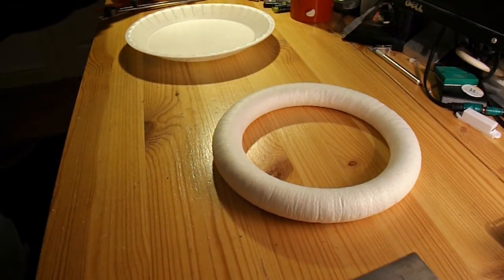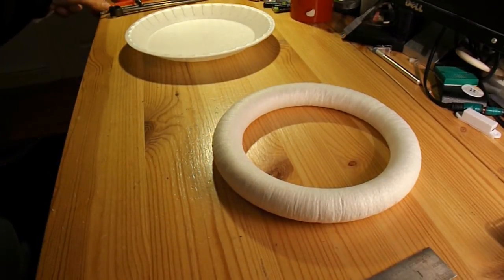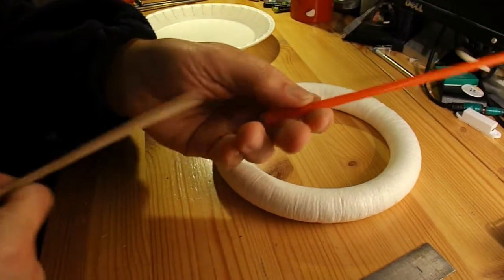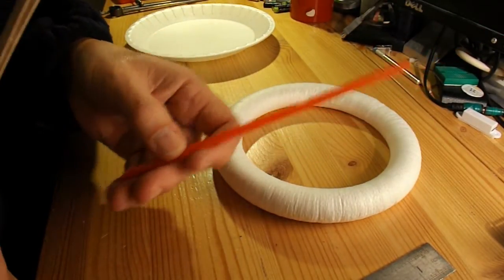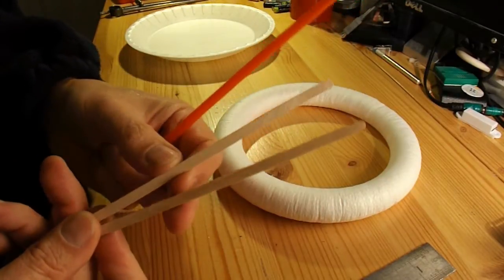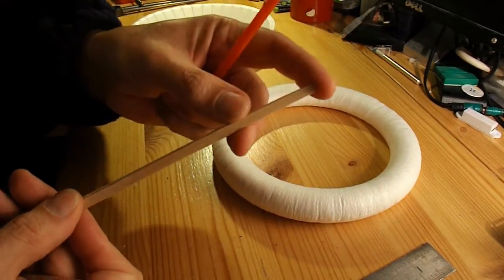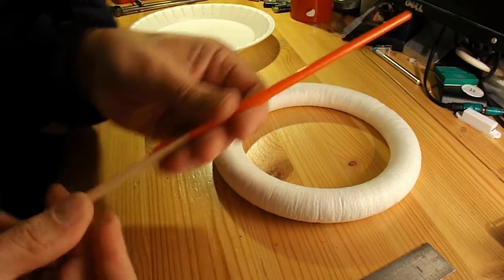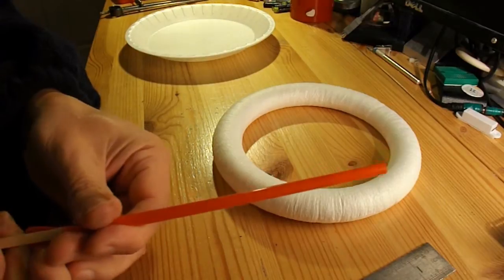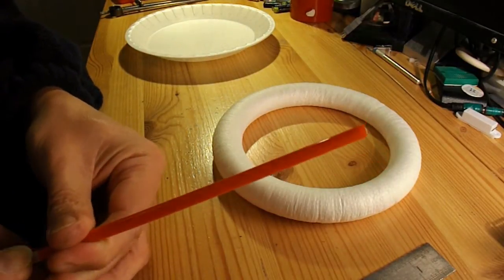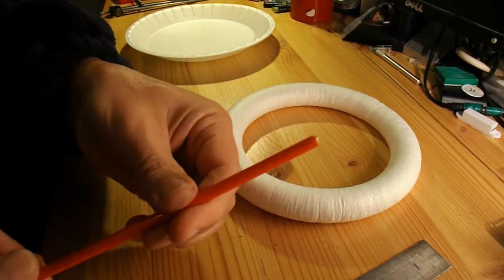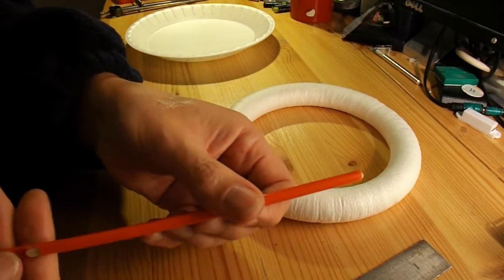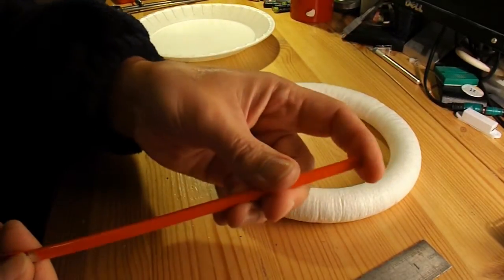I've got an idea for the axle, probably not practical but I'm going to give it a try just because it might be interesting. I've got a drinking straw here and a couple of those wooden stirrers that you get for stirring your coffee in coffee shops, and that happens to fit inside there. So I might just try and see if I can make an axle out of that.